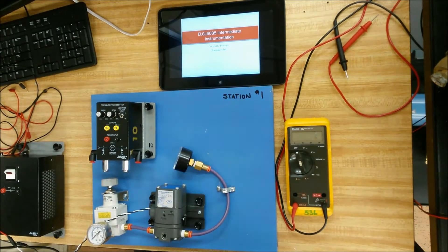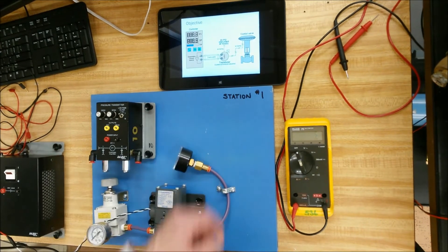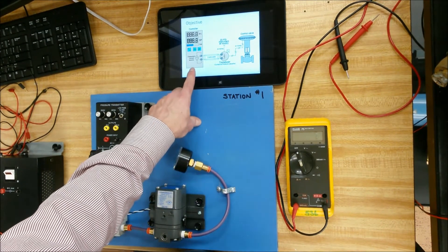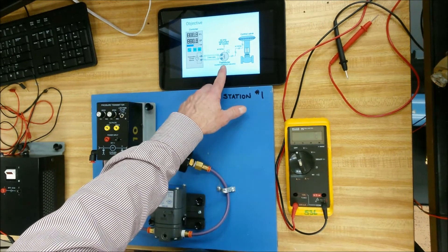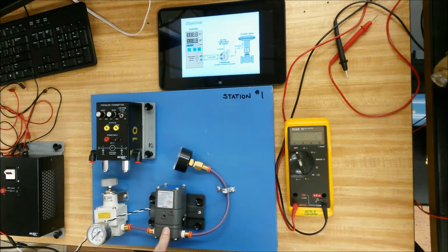Alright guys, so we're going to do the current to pressure transducer lab. What we're trying to mimic here is having a current signal coming from the control room out in the field to this coil, the transducer. A transducer is just another name for something that changes one energy into another. In this case, it's changing current into pressure.